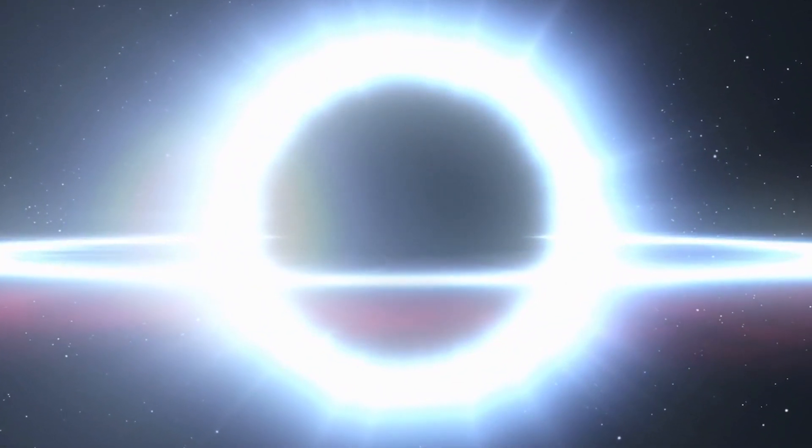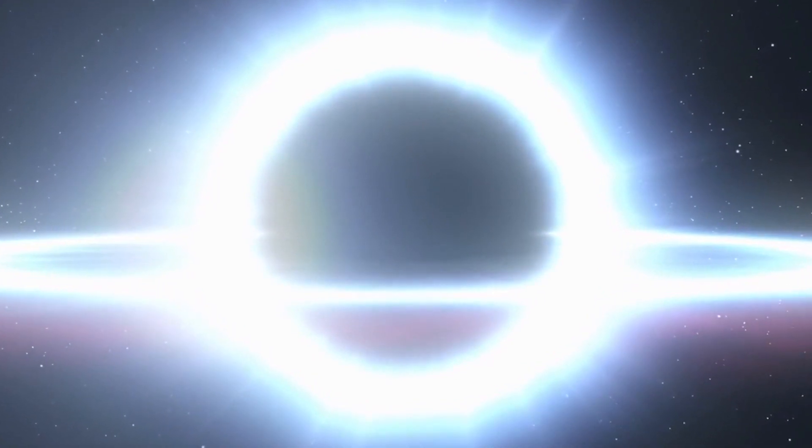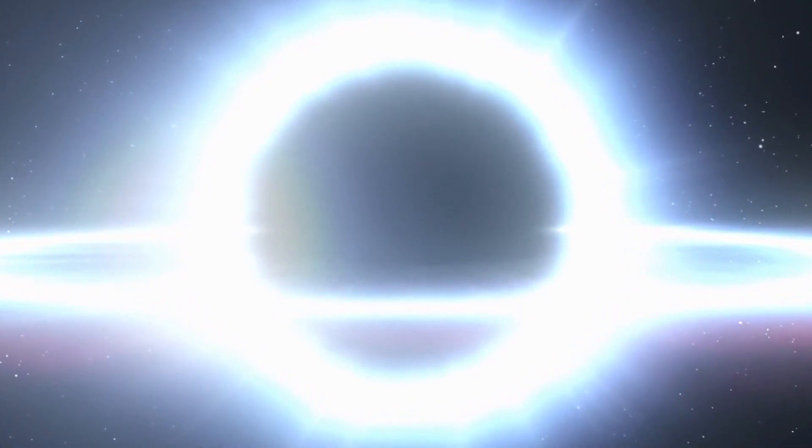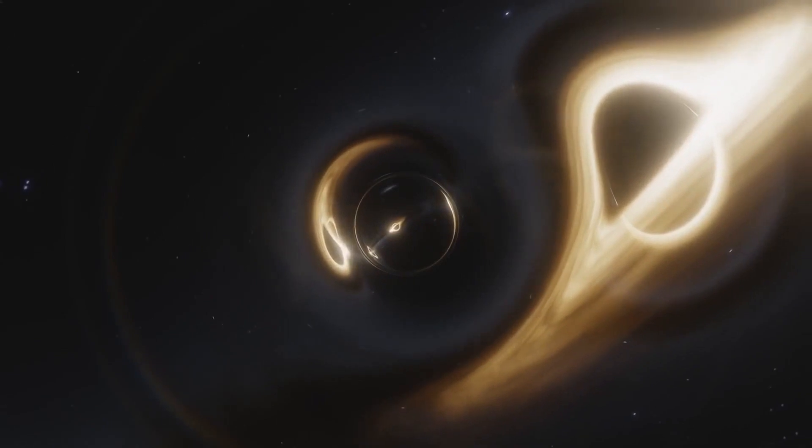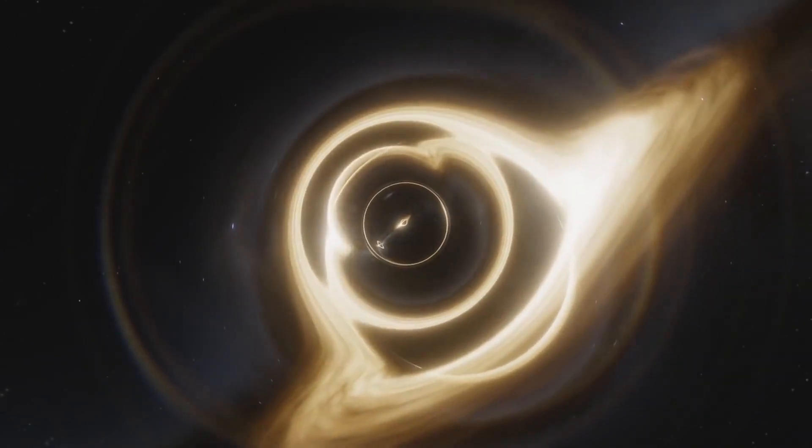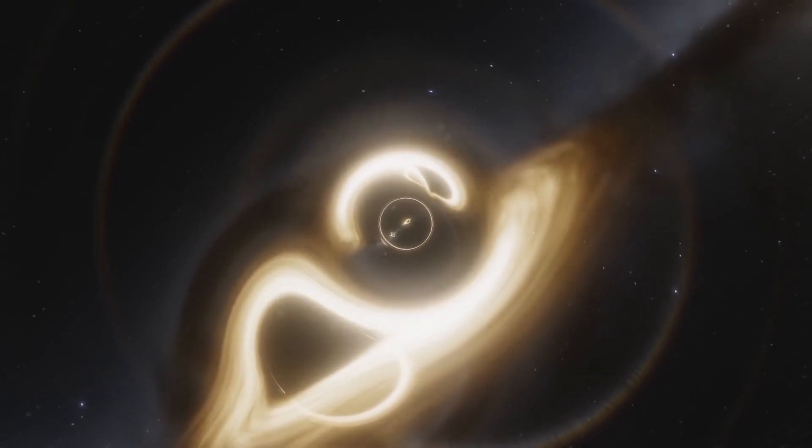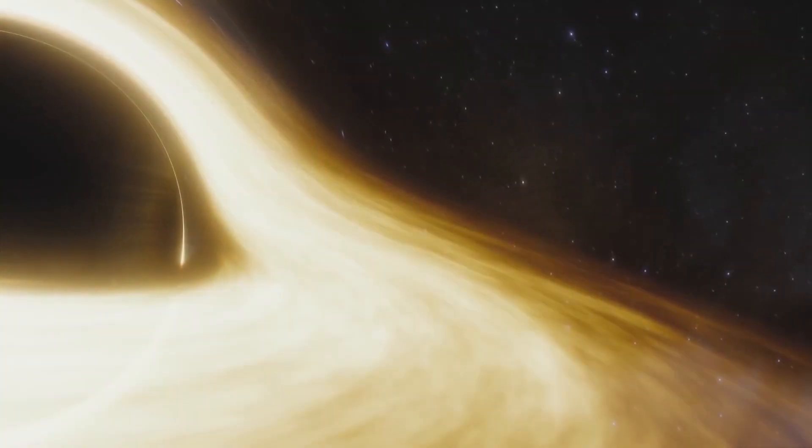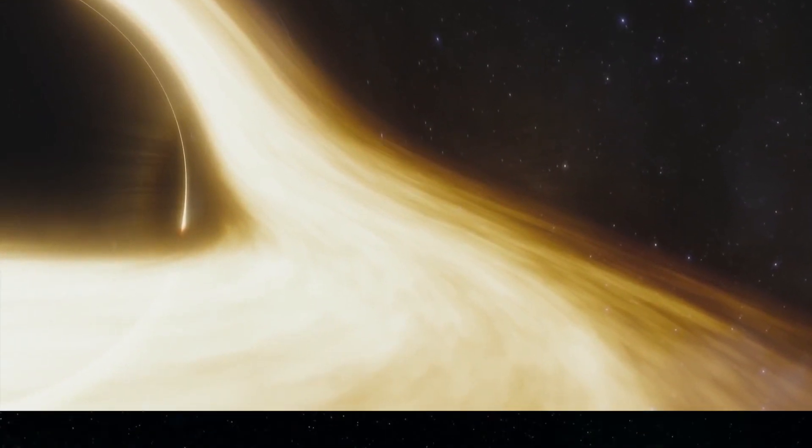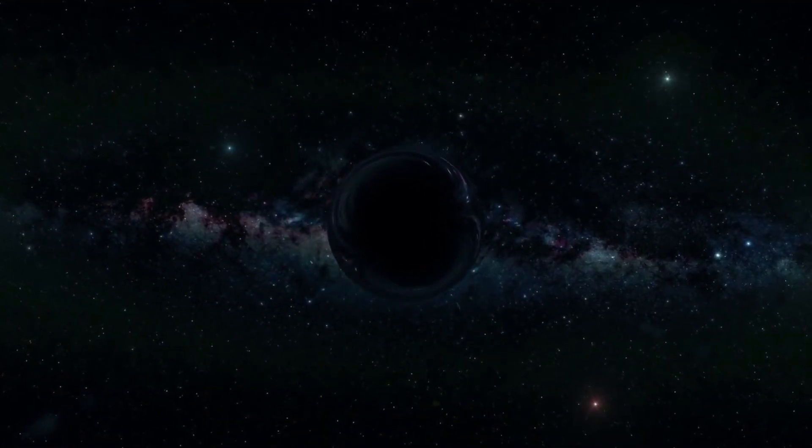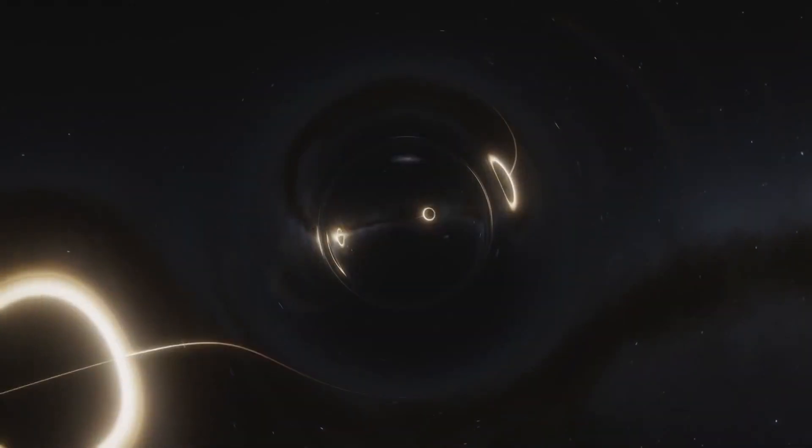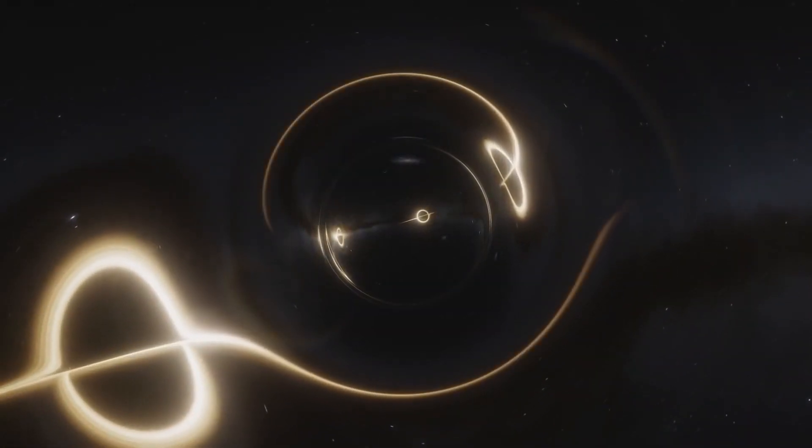The black hole gorges via a process called accretion, in which it siphons matter from a thin disk of gas and dust rotating around the massive object. Other black holes of a similar size stopped growing billions of years ago, but this newly discovered black hole is still getting larger. It's now 500 times bigger than Sagittarius A, the supermassive black hole at the heart of the Milky Way, and would fit the whole solar system behind its event horizon, the boundary beyond which nothing can escape.